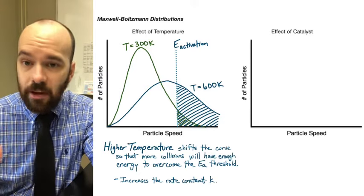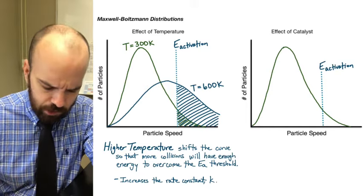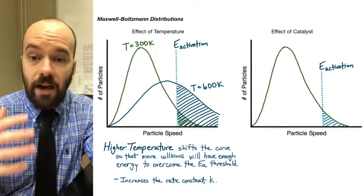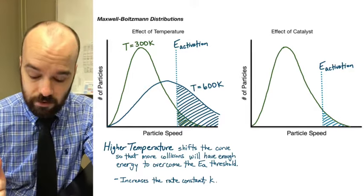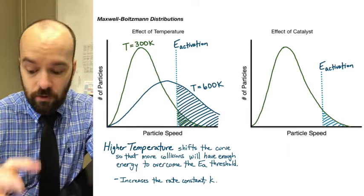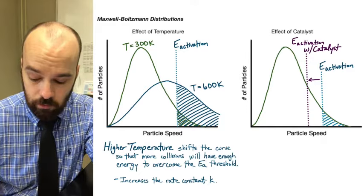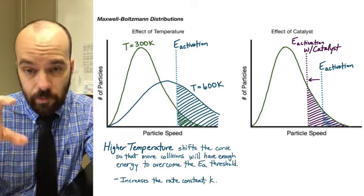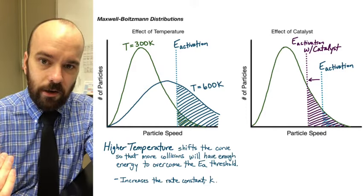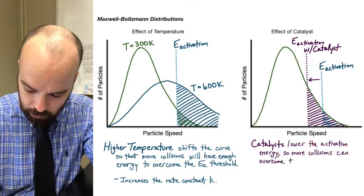Now let's take a look at the example of a catalyst. A catalyst won't shift the curve, but it will change where that activation energy barrier is. Starting with the same Maxwell-Boltzmann distribution, we have an activation energy barrier line, and particles to the right of that with enough energy will result in a reaction. A catalyst is going to lower that barrier — it will shift the activation energy barrier line to the left — resulting in more particles being able to overcome it. It doesn't change the speeds or the energies of the particles; it just lowers the barrier those particles have to overcome.